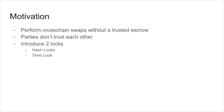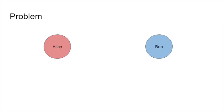Let's talk about the motivation. Suppose Alice and Bob want to perform a cross-chain swap, but they do not trust each other. As scrolls may be unreliable, so what can we do about it? Here's the problem: suppose Alice sends money to Bob directly — Bob could just run away. This is not good.